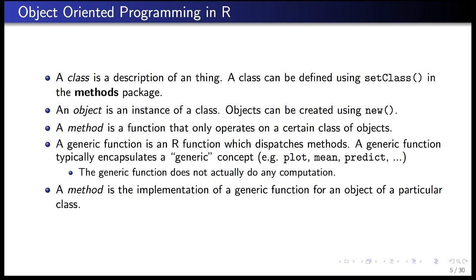The way object-oriented programming works in R is through classes and methods. A class is a description of a thing — think of a new type of object that doesn't already have representation in R. The class can be defined using the setClass function in the methods package. An object is an instance of a class — for example, 4.3 and 6.5 are both instances of the numeric class. They are different objects but the same class. New types of objects can be created using the function new().